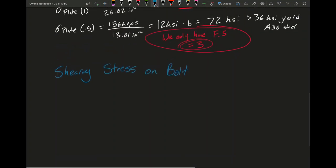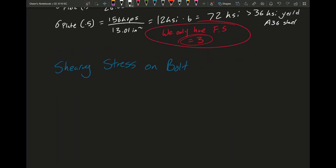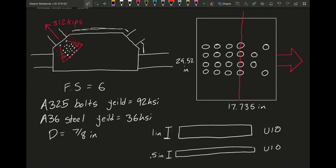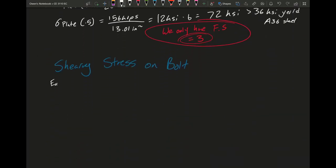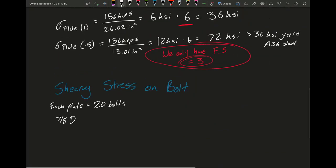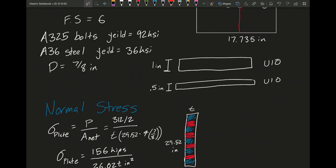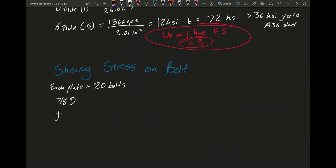We're ready to focus on the shearing stresses in our bolts. Basically right here, we have, you can count them, there are 20 bolts there. It's a five by four row if you rearrange some of the bolts. So we know each plate equals 20 bolts. We know they're 7 eighths of an inch, and we know our yield strength for them is going to be 92 KSI.